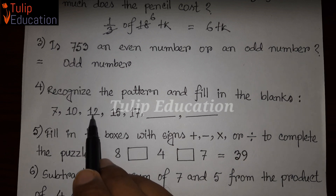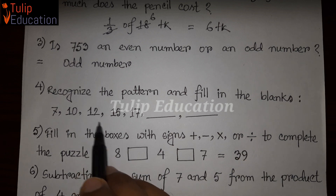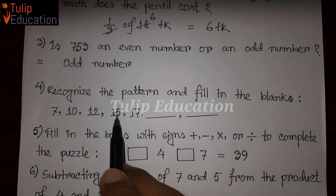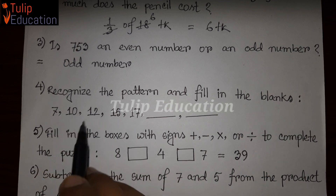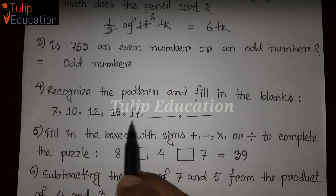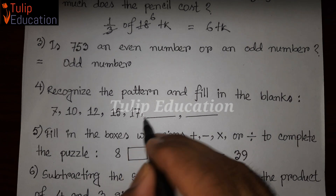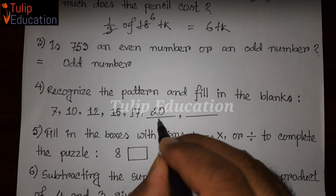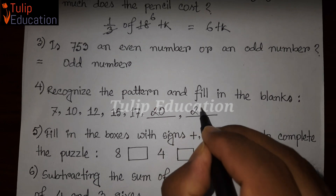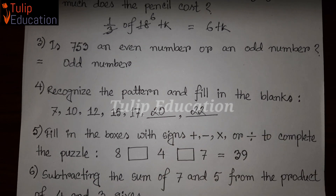Again, from 12 to 15 we add 3, and from 15 to 17 we add 2. The pattern alternates between adding 3 and adding 2. So the next number after 17 would be 17 plus 3 equals 20, then 20 plus 2 equals 22.